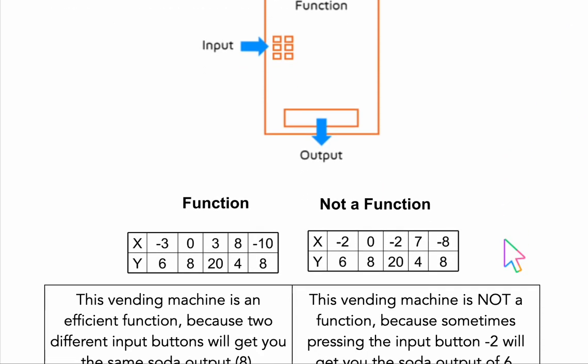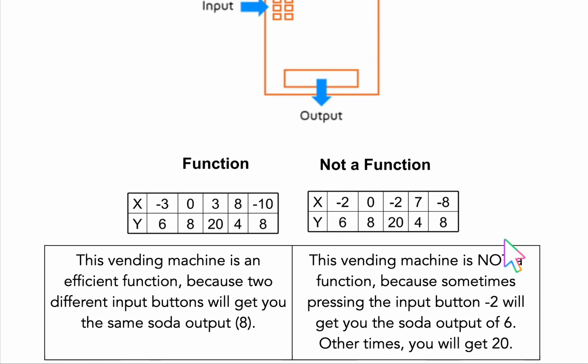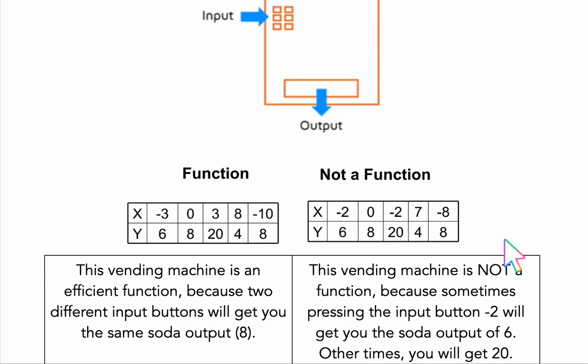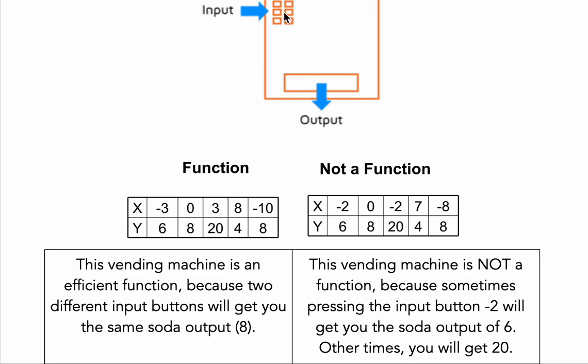So let's take a look at some examples of a function versus not a function, something that looks like a function but actually isn't a function. So let's take a look at these two tables. Remember that x is the input, y is the output. So if we look at this first table, we will notice that when we, for instance, input negative 3, we will get the output of 6.